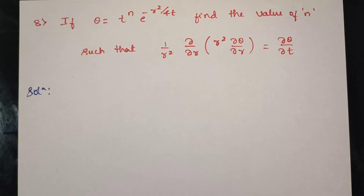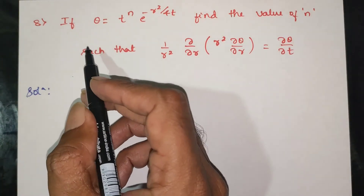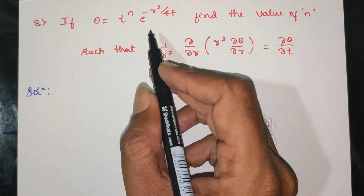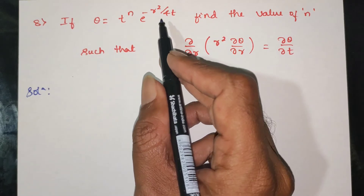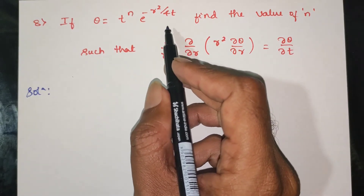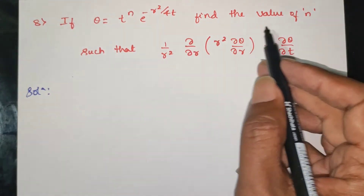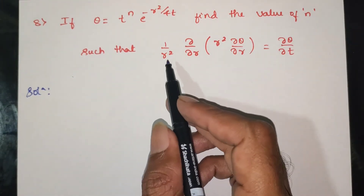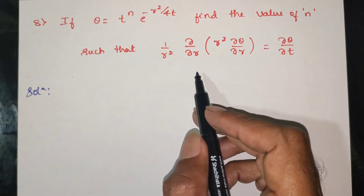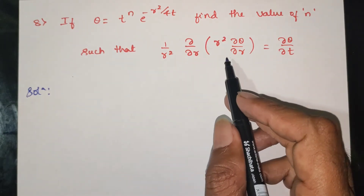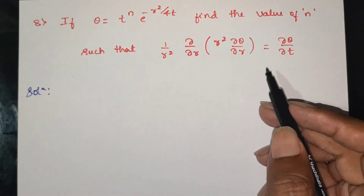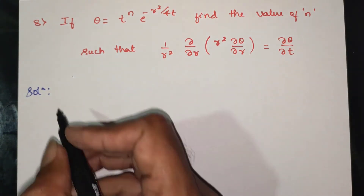Question: θ is equal to t^n · e^(-r²/4t). Find the value of n such that (1/r²) · ∂/∂r(r² · ∂θ/∂r) is equal to ∂θ/∂t.